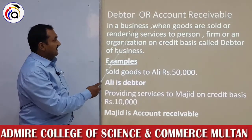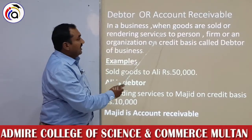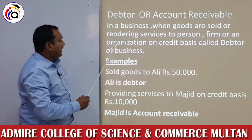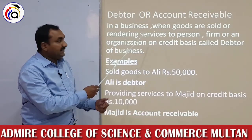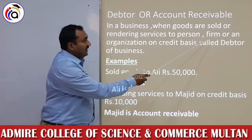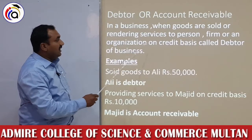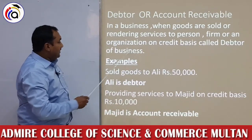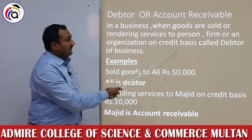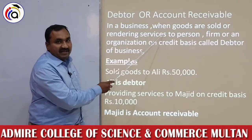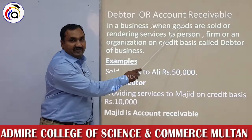In a business, when goods are sold or services are rendered to a person, firm, or organization on a credit basis, that person is called the debtor of the business. Students, یاد رکھئے گا — جب بھی credit basis پر کوئی چیز فروخت کی جائے گی یا services دی جائیں گی تو ہمیشہ account receivable generate ہوں گے۔